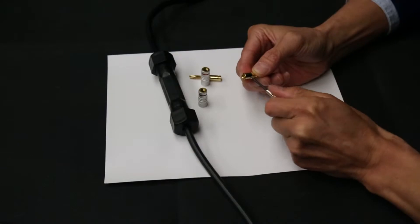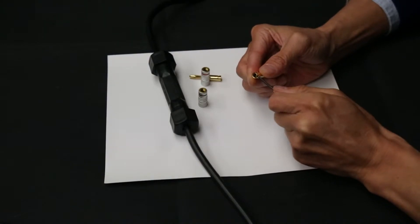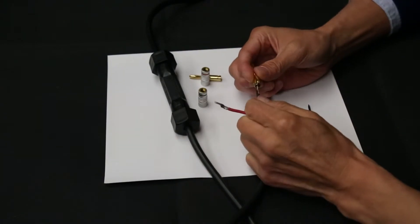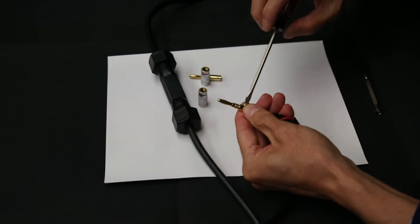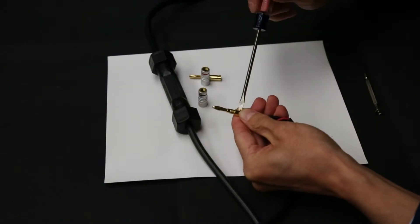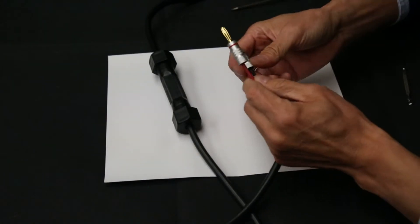Banana plugs are fairly simple to use. You insert each bare wire into the color matching plug. The important keys are one, make sure the wires are secure after tightening the screws. Two, make sure that no bare wires are exposed beyond the cap.